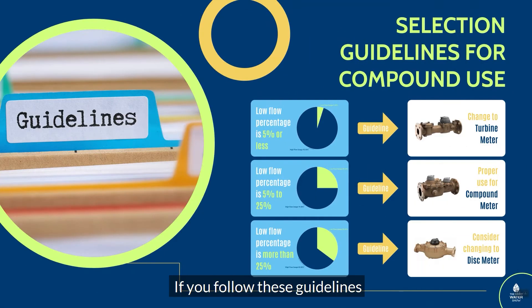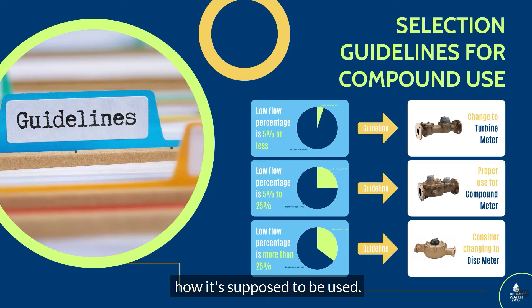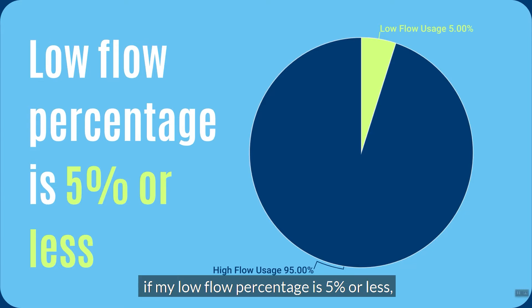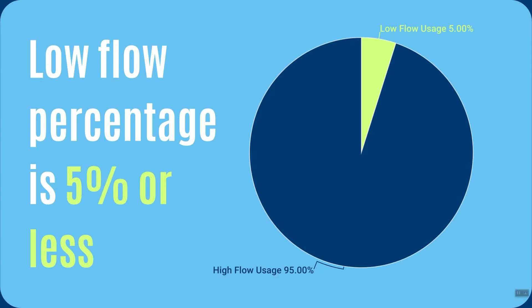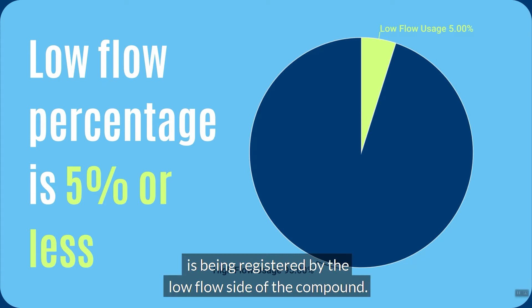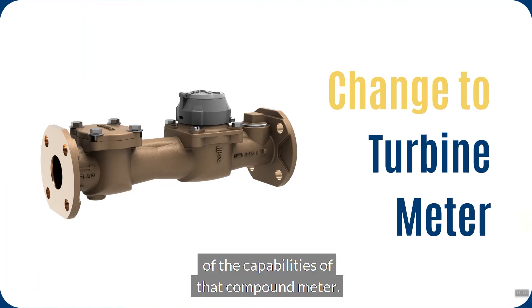What does that tell me? If you follow these guidelines, you can take that information and understand if you're properly using a compound meter the way it's supposed to be used. The first scenario says this: if my low flow percentage is 5% or less — meaning 5% or less of my overall usage is being registered by the low flow side of the compound — you may want to consider changing to a turbine meter. You're not really taking full advantage of the capabilities of that compound meter.